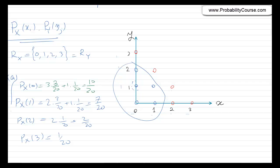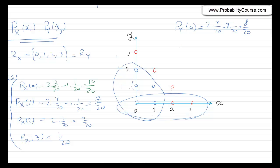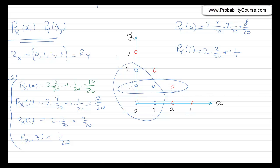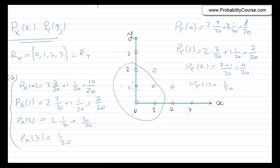For Y: P_Y(0) corresponds to four points — two at 3/20 and two at 1/20 — giving 8/20. P_Y(1) corresponds to three points — two at 3/20 and one at 1/20 — giving 7/20. P_Y(2) gives 4/20, and P_Y(3) is 1/20. These also sum to 1.